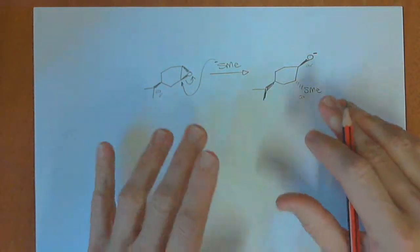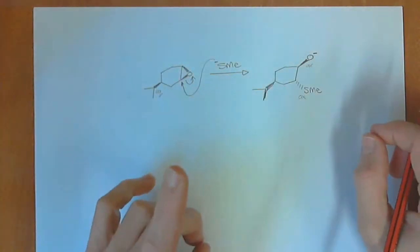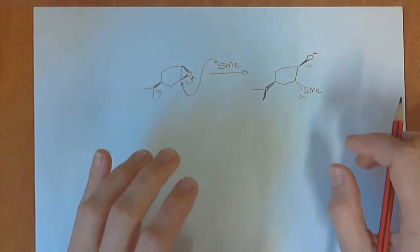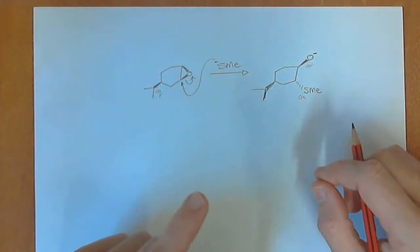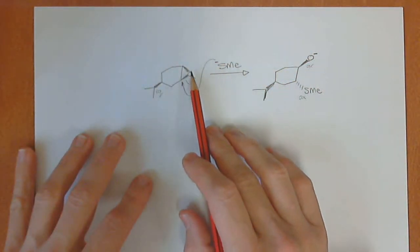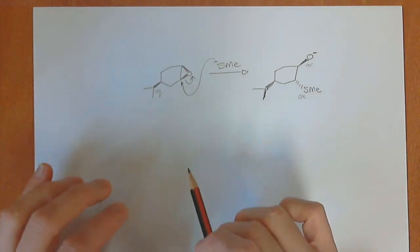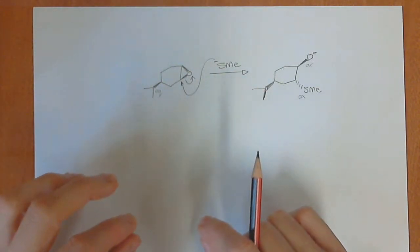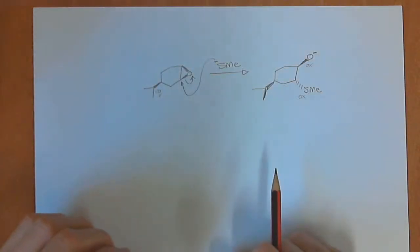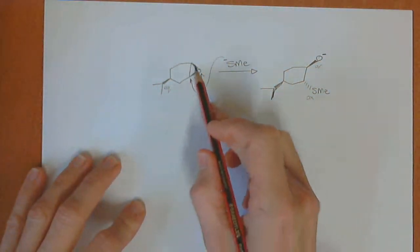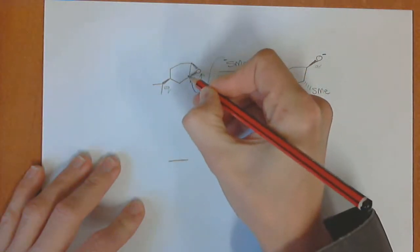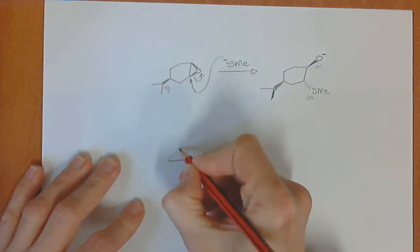Now I gave you the rule - this is a trans-diaxial ring opening - but why does it go that way? The explanation is quite complicated, but I want you to understand it because it applies to a whole host of other reactions. It starts by understanding that epoxides and cyclohexane rings have a three-dimensional shape which is very similar to the cyclohexane chair conformation. When we draw this out, instead of having a double bond, we've got an epoxide there.